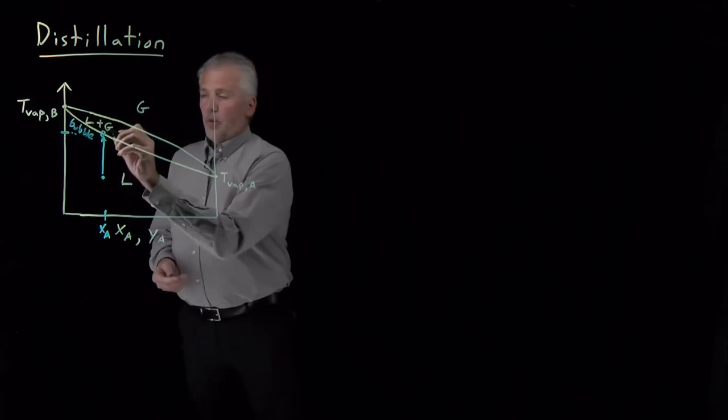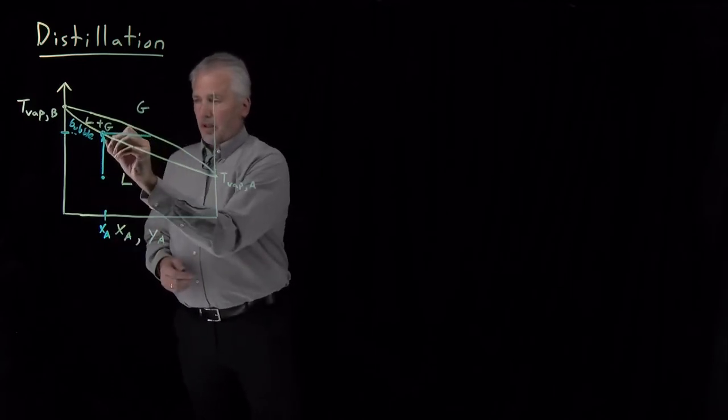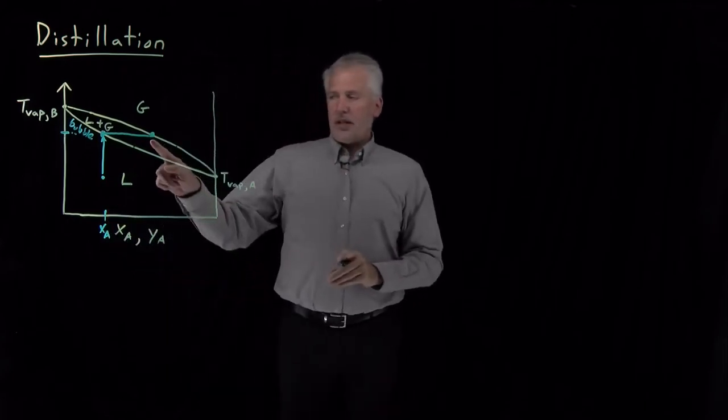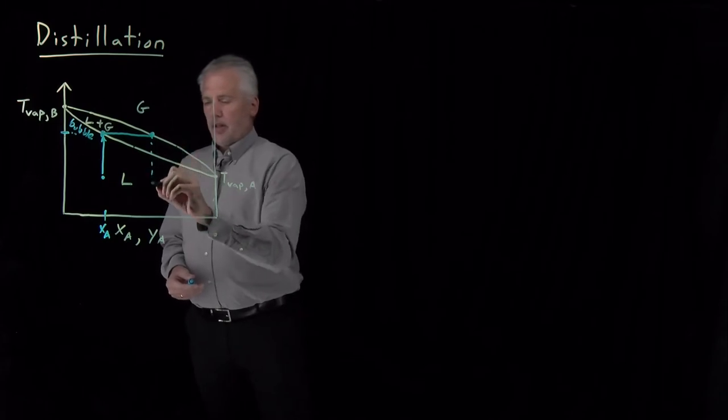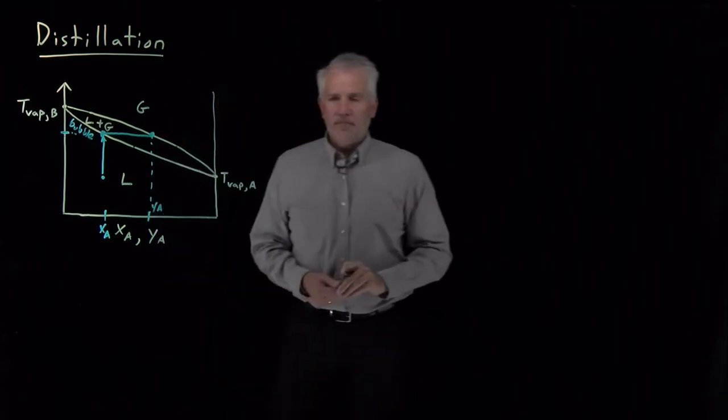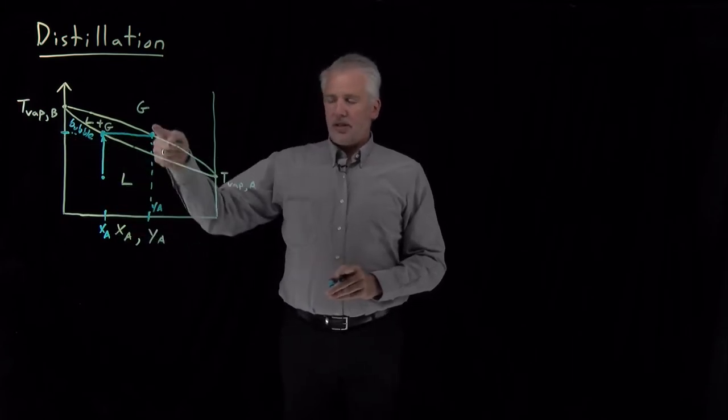And then what this liquid gas coexistence curve tells us is at that temperature, the liquid with this composition is in coexistence with the gas at this composition. So when I read downward to this axis, this is the mole fraction of the vapor phase. So at this temperature, the liquid has this composition, the vapor has this composition.